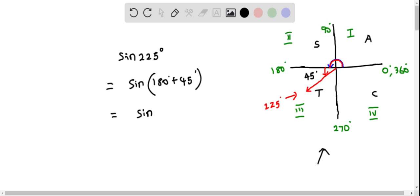However, this angle lies in the third quadrant. In the third quadrant, only tangent ratio is positive and other ratios are negative. So we have to put negative for sine ratio because we are finding sine of 225 degrees.